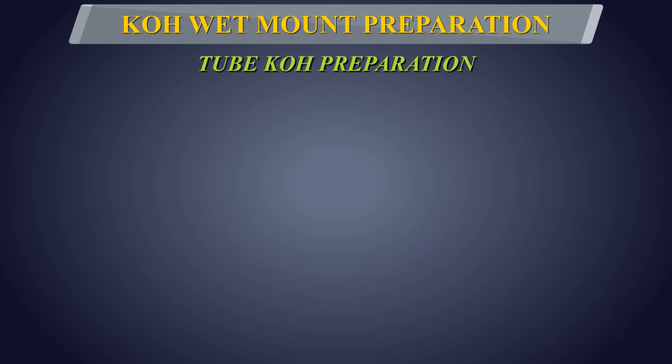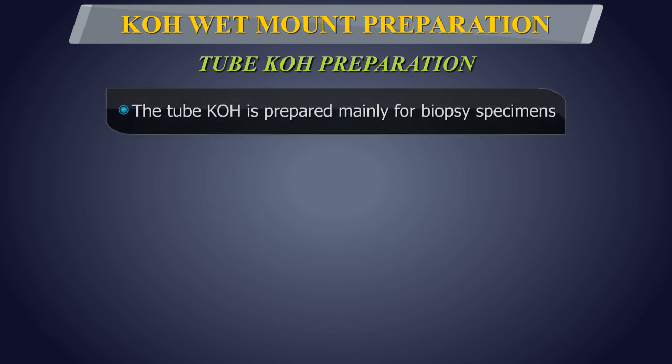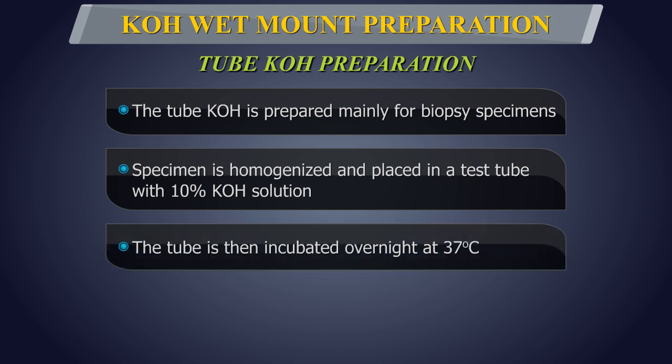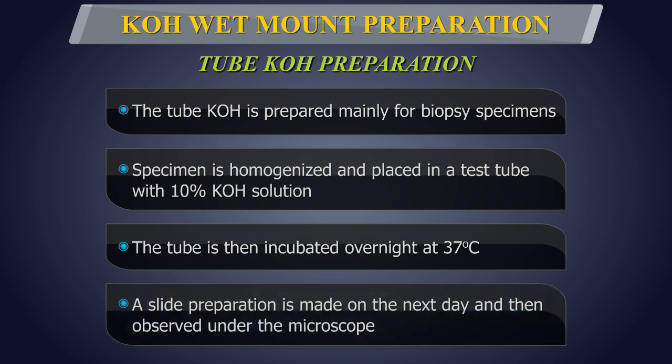Tube Potassium Hydroxide Preparation: The tube KOH preparation is prepared mainly for biopsy specimens or specimens which take longer time to dissolve. The specimen should be homogenised and placed in a test tube with 10% potassium hydroxide solution. The tube is then incubated overnight at 37 degrees centigrade. A slide preparation is made on the next day and then observed under the microscope.